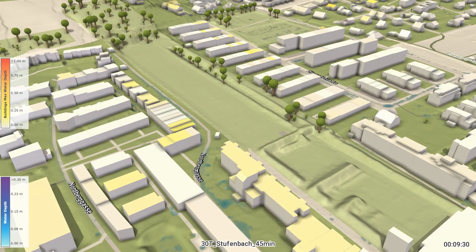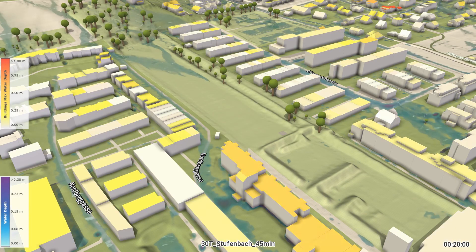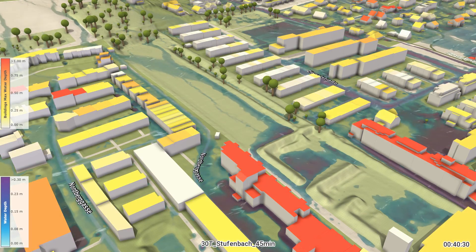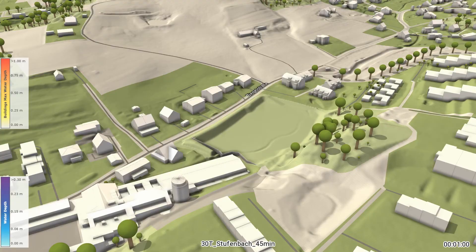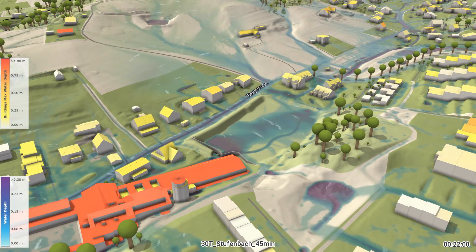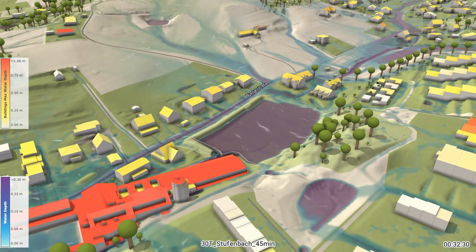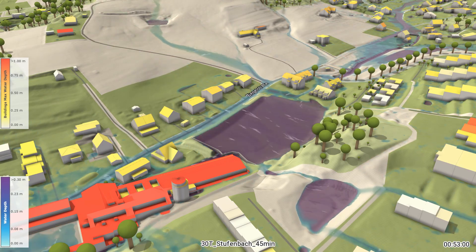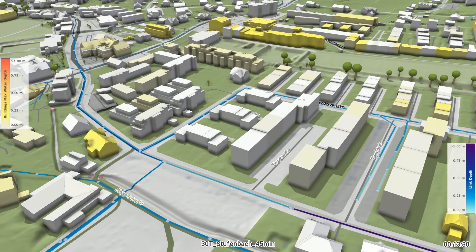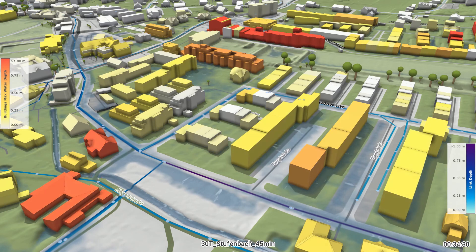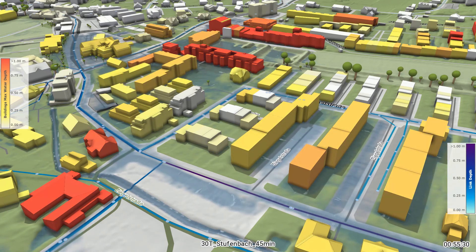Like we also did here in the RainMan project for the city of Graz in Austria. We created a high-quality rainfall runoff model simulating rainwater interception, soil infiltration, surface runoff, and the sewer network in a tightly coupled way.